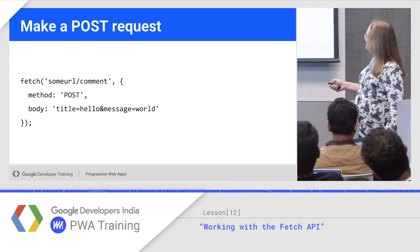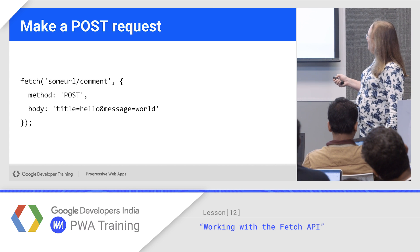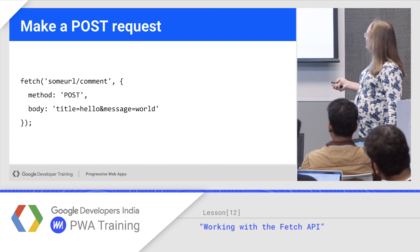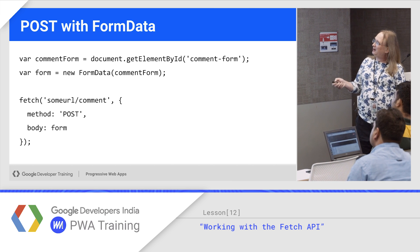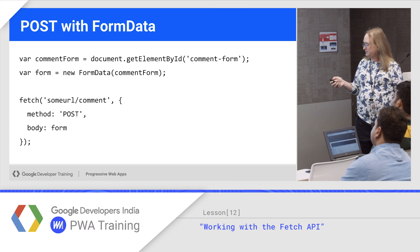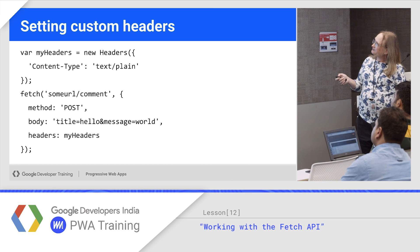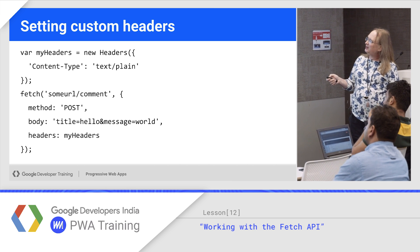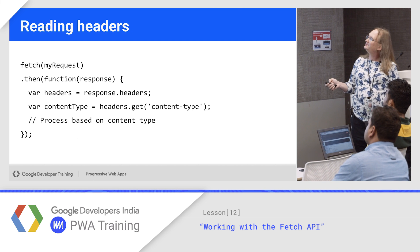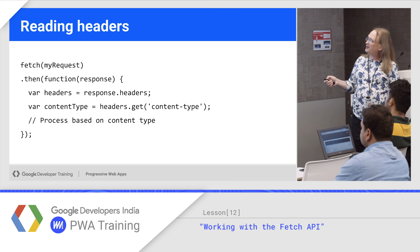Here's a POST — you just go ahead and put the data in. I could get a form, get the form data from it and post it. I could also attach custom headers: create a headers object, add what you need, and set the headers property. Or you could read the headers back from the response using response.headers and then do a get.